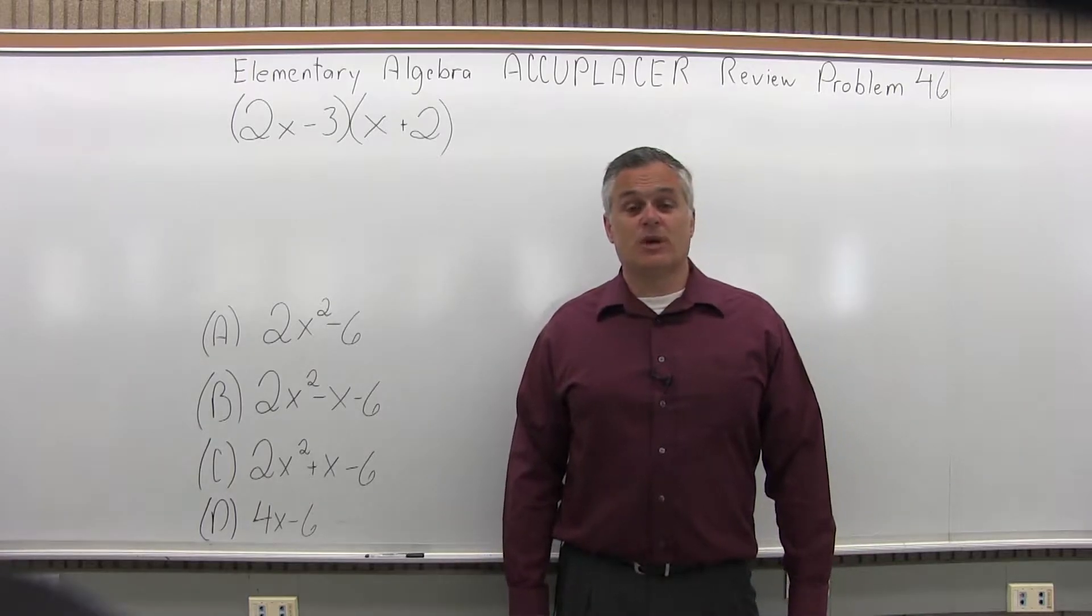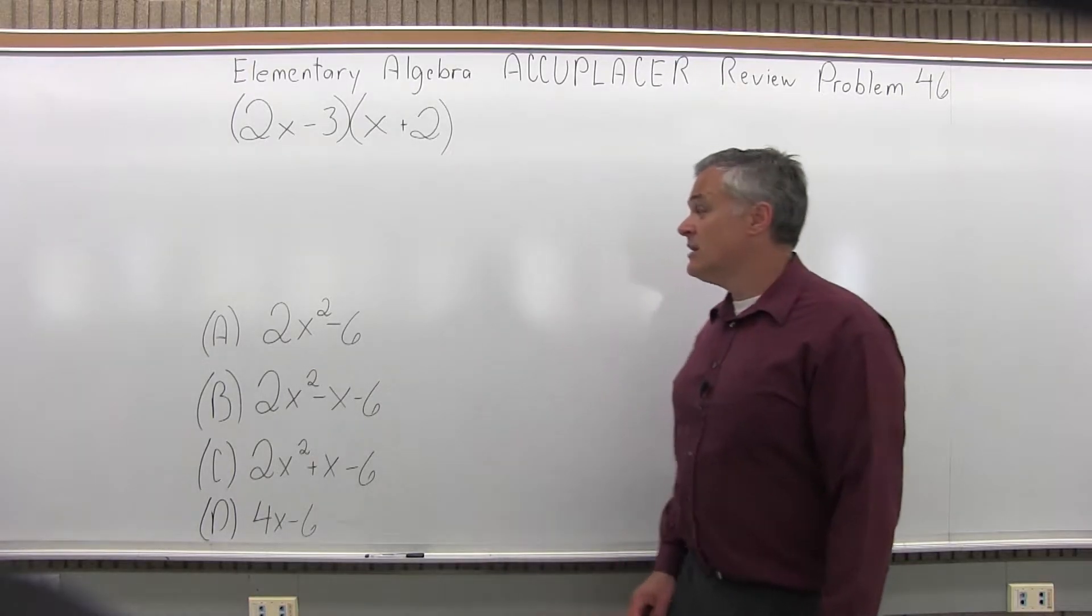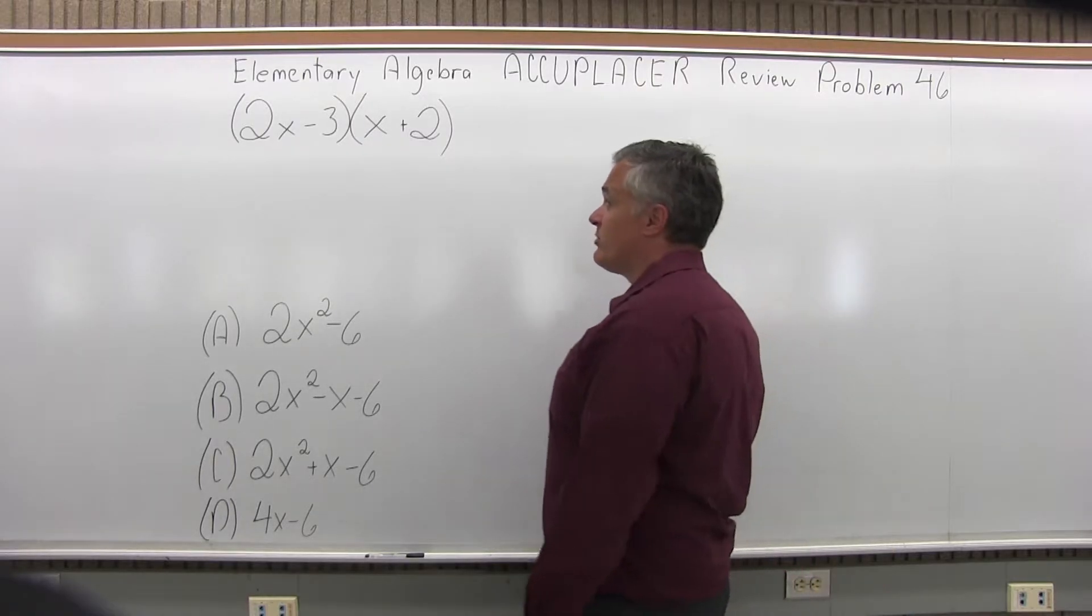This is the Elementary Algebra Accuplacer Review, Problem 46. We have 2x minus 3 in parentheses times x plus 2 in parentheses.